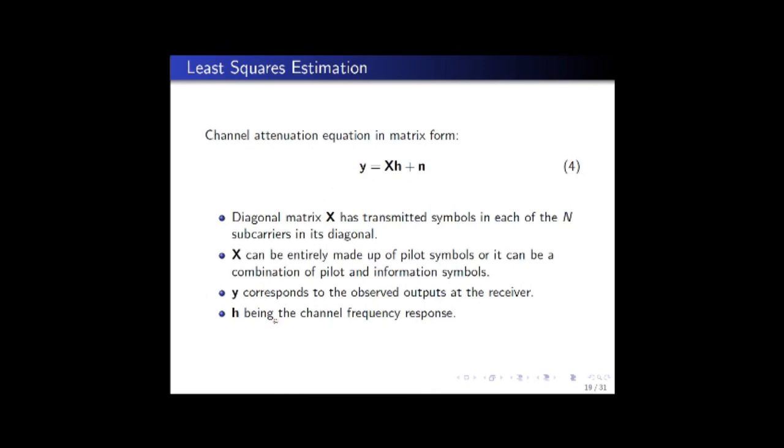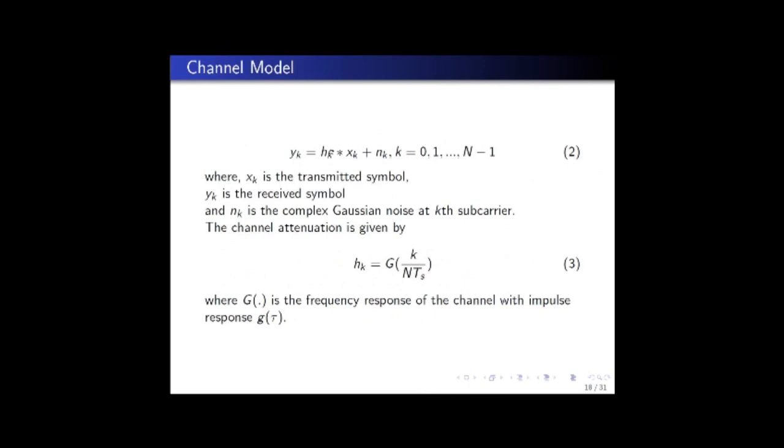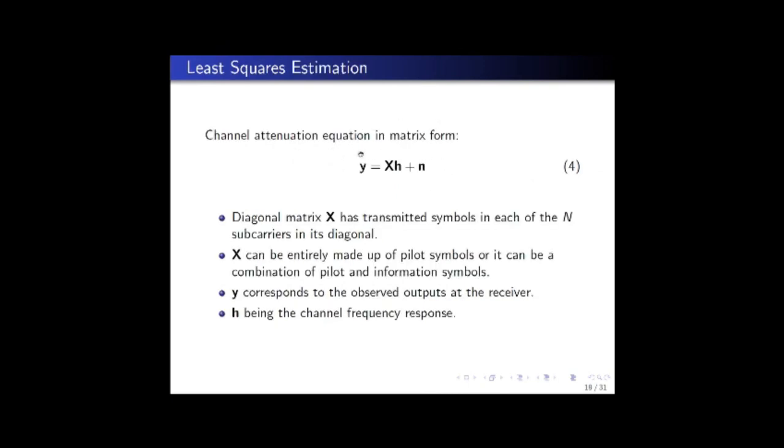Now we will discuss one of the simplest and most straightforward estimation methods called the least squares estimation or LS estimation. The channel attenuation equation which was given in the previous slide, if it is written in matrix form, looks like this. Here Y is the received vector at the receiver, X is a square diagonal matrix with the diagonal elements as the transmitted data vectors, H is a vector of channel attenuation for different subcarriers, and N is the noise vector.